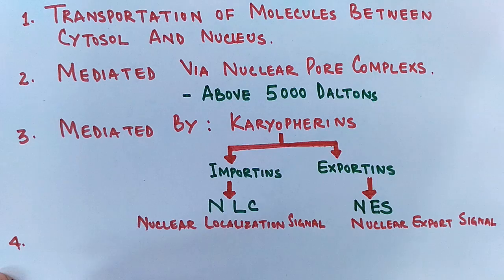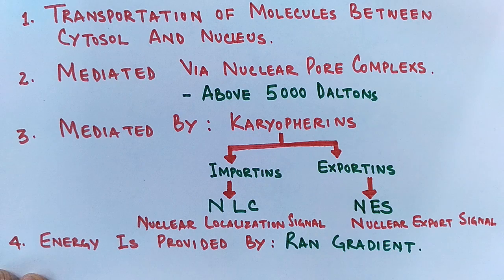Finally, the energy for this process is provided by RAN gradient, that's RAS-related nuclear protein. This is the protein molecule which is present within the cell and is able to provide energy for this process.